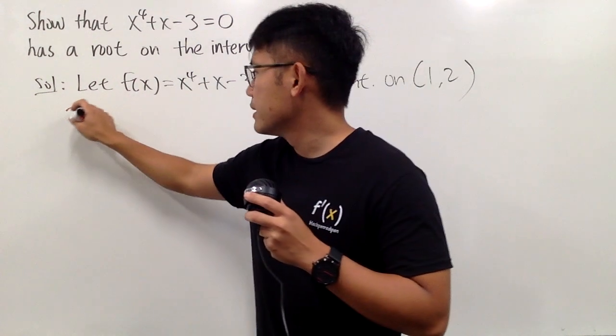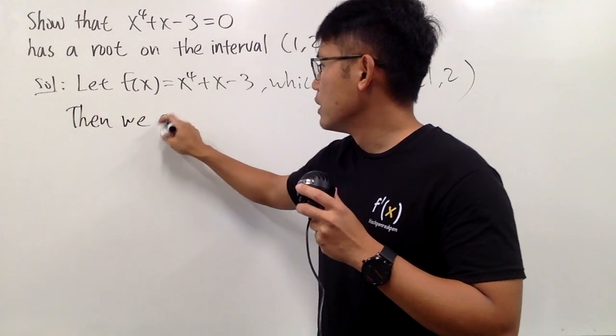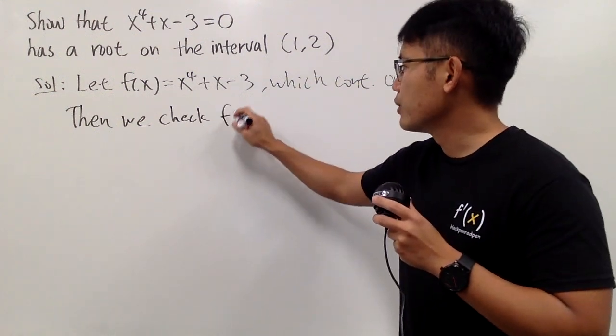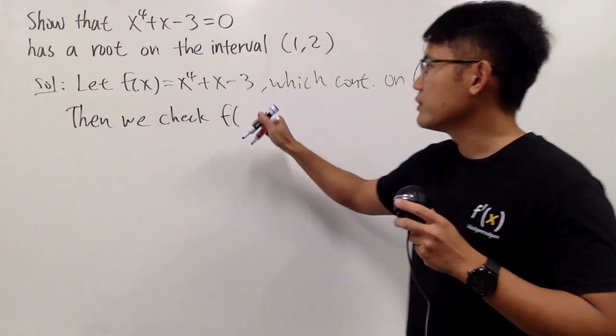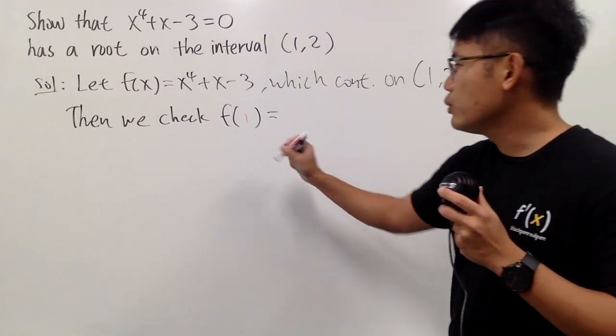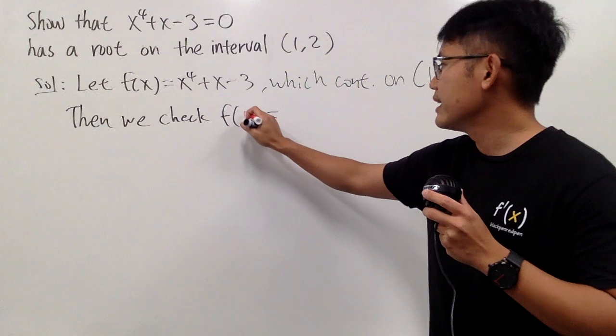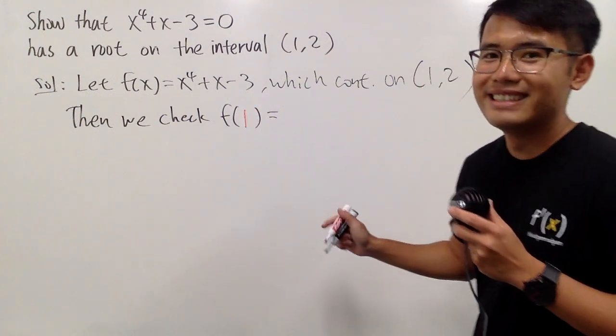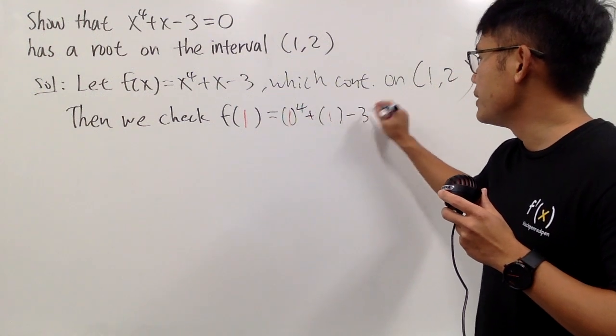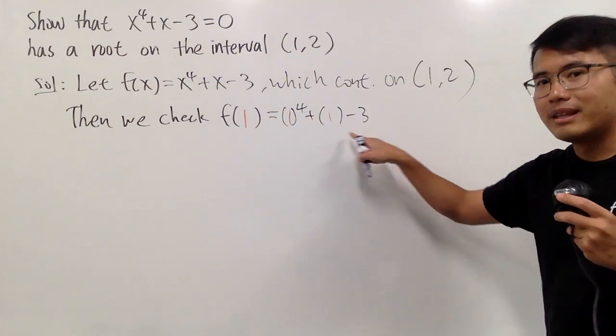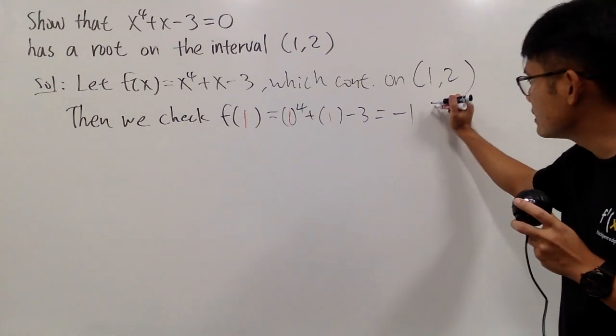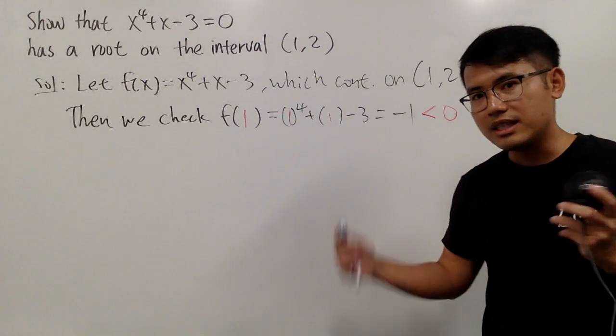Then we check the end points of this interval. So I'm just going to plug in 1 into this function first. We are going to check f of 1, and we have to see what does this equal to. And let's just go ahead and do the math. So plug in 1. So we have 1 to the fourth power plus 1 and then minus 3. This is just 1 plus 1 and then minus 3, so you get negative 1. And you have to indicate that this right here is less than 0. It's a negative number.